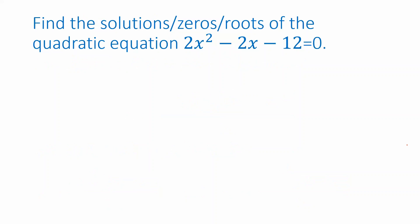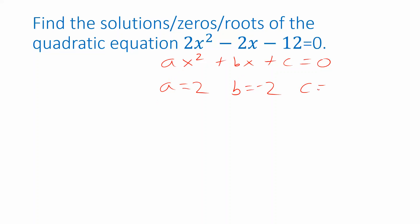Let's look at an example. We're asked to find the zeros, solutions, or roots of a quadratic equation — those three terms all mean the same thing. This equation is of the form ax squared plus bx plus c equals 0, and we can identify the coefficients: a equals 2, b equals negative 2, and c equals negative 12.